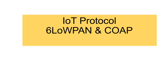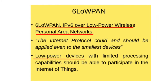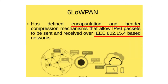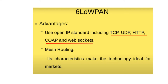6LoWPAN stands for IPv6 over Low Power Wireless Personal Area Network. This protocol is mainly designed for small devices which consume low power with limited processing capability, which is a prime requirement of IoT. It works with defined encapsulation and header compression mechanisms following IEEE 802.15.4 based networks. The major advantages of 6LoWPAN include support for IP standards including TCP, UDP, HTTP, CoAP, and web sockets, and it follows excellent mesh routing.